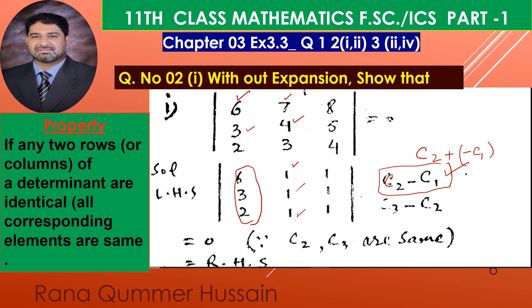Next we do the same process for column 3 minus column 2. Column 3 has 8, corresponding element in column 2 is 7, so 8 minus 7 gives 1. Then 5 minus 4 gives 1. And 4 minus 3 gives 1. So column 2 and column 3 are now exactly the same — they are identical. Since two columns are identical, the determinant equals zero.